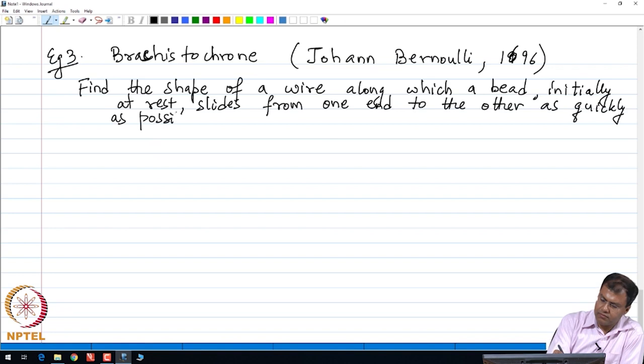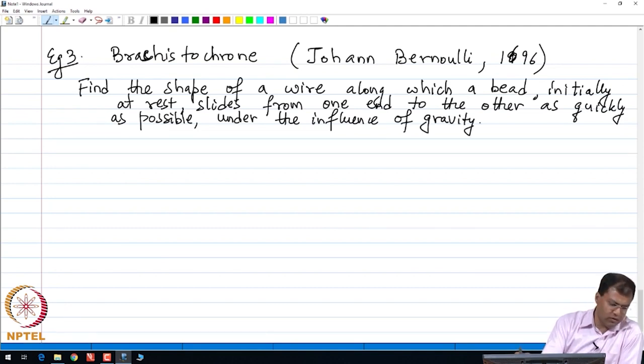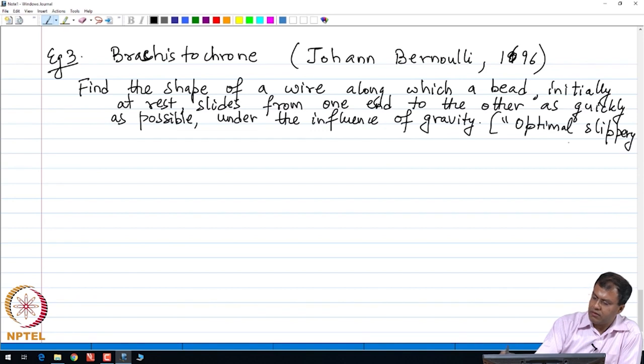Under the influence of gravity. In short, this particular problem of Brachistochrone was also termed as the optimal slippery slope problem, the optimal slippery slope problem or optimal slippery dip.